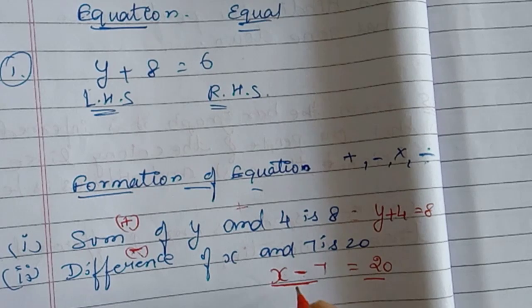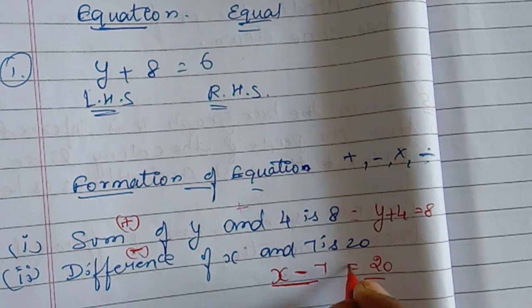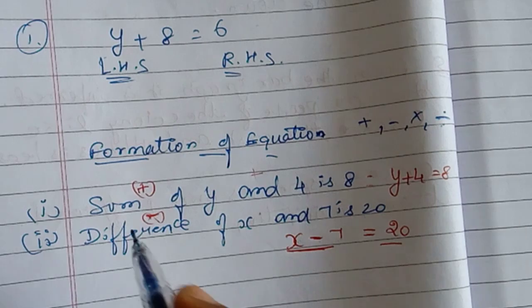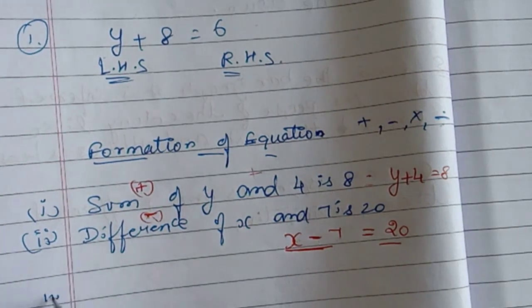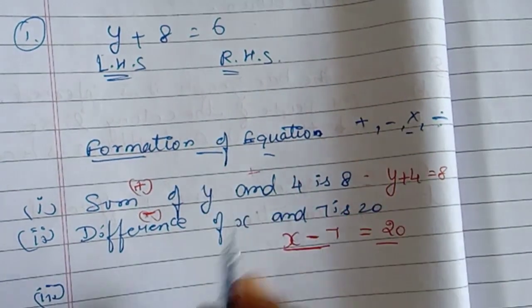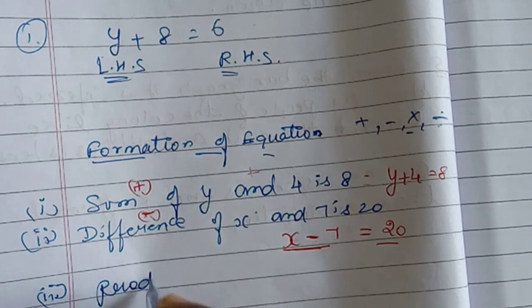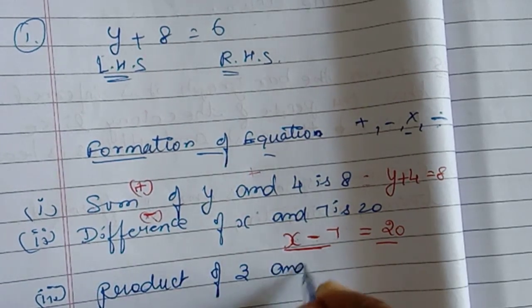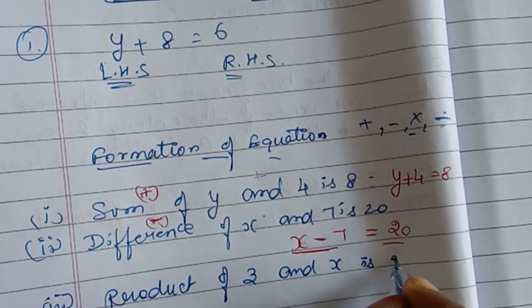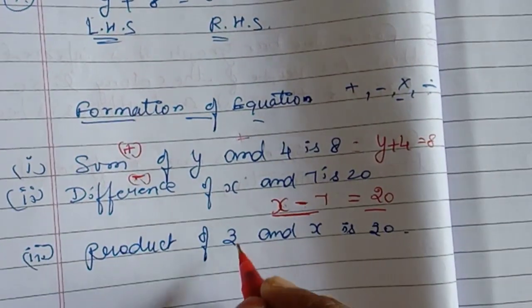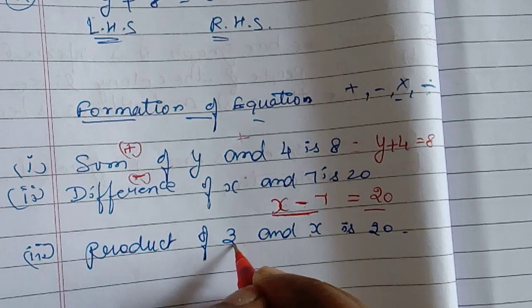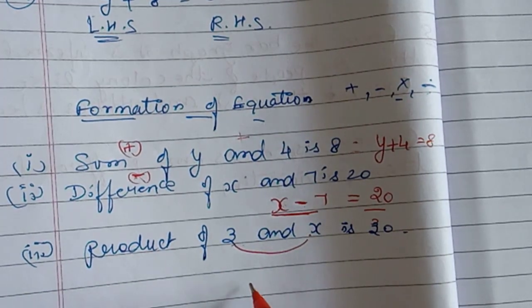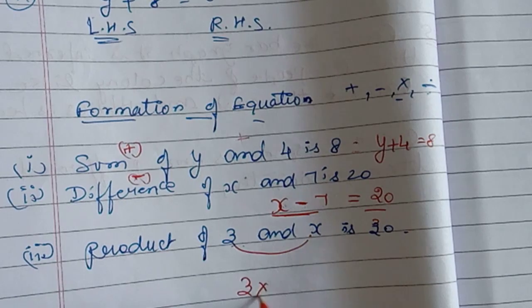In the LHS and RHS, X minus 7 is equal to 20. The multiplication is equal to product. Product of 3 and X is 30. So 3 multiplied by X is equal to 30.